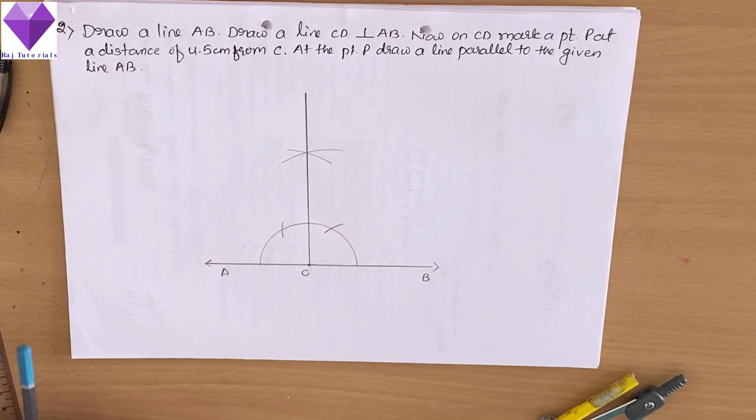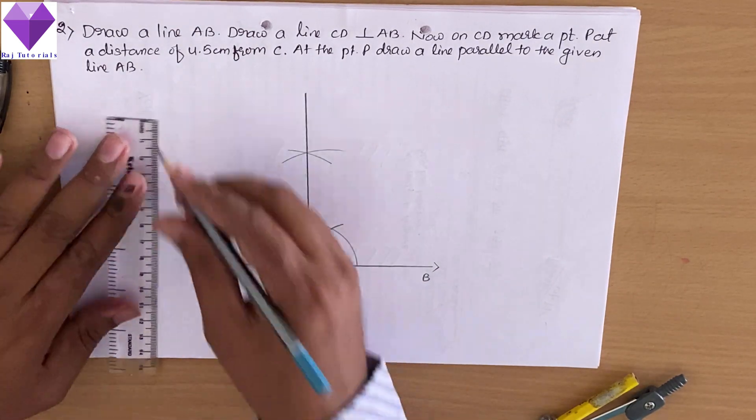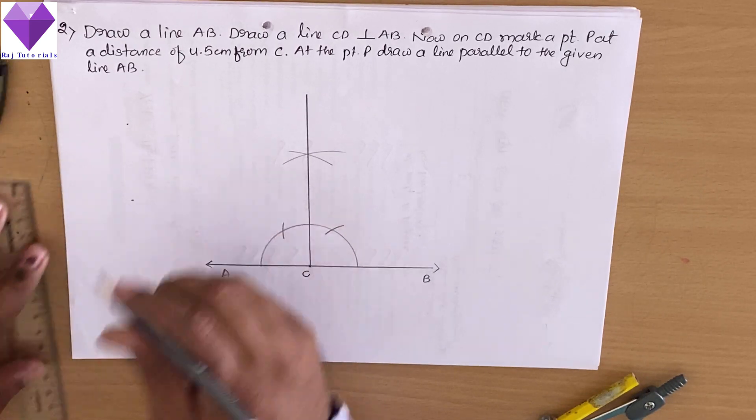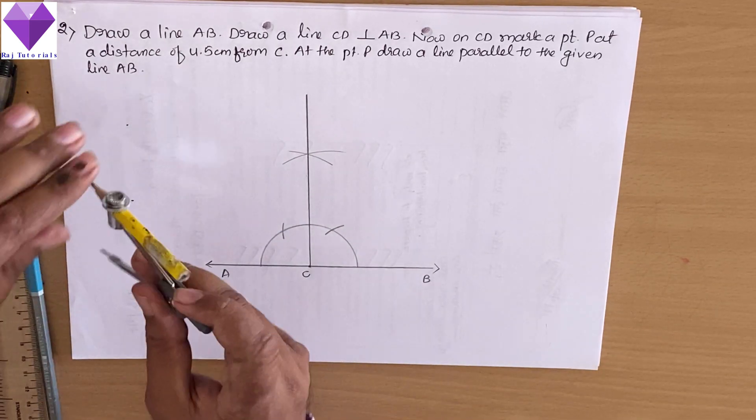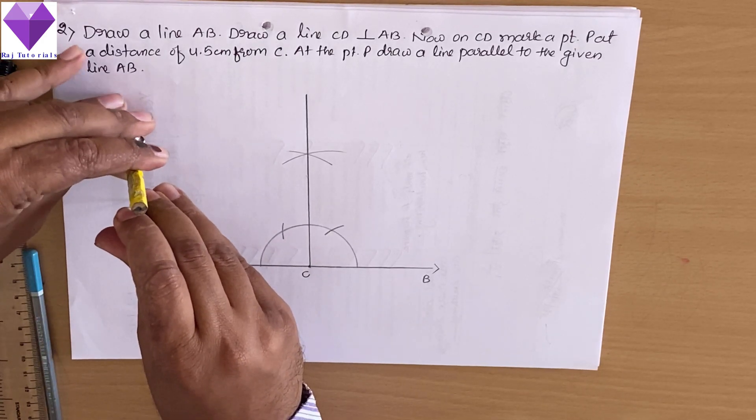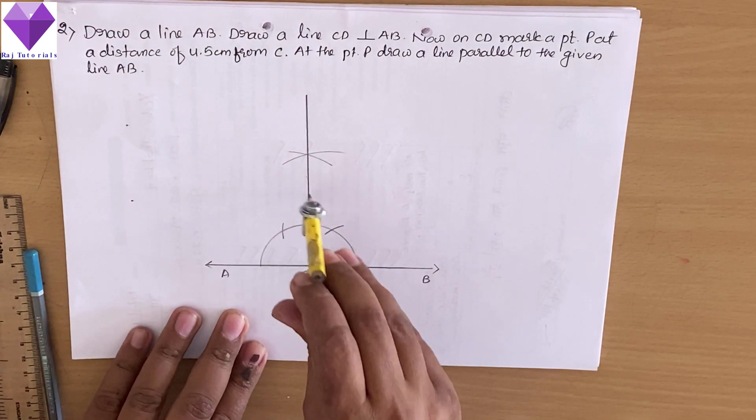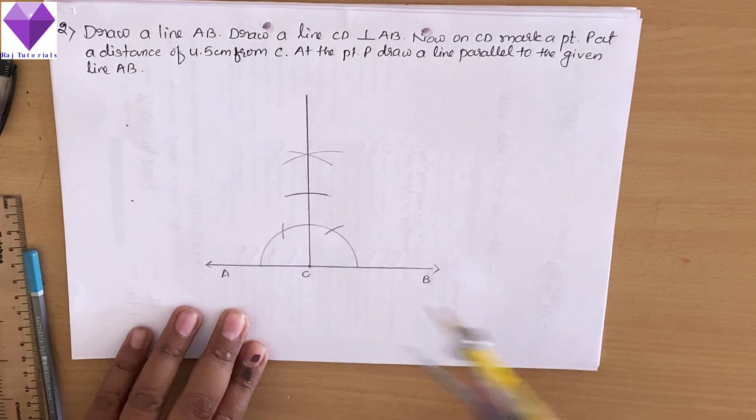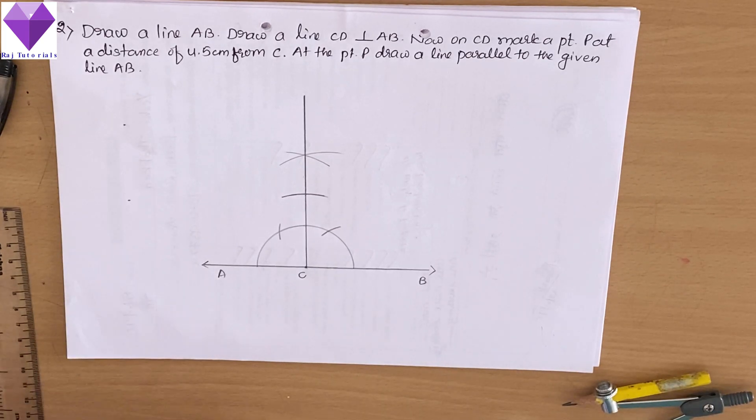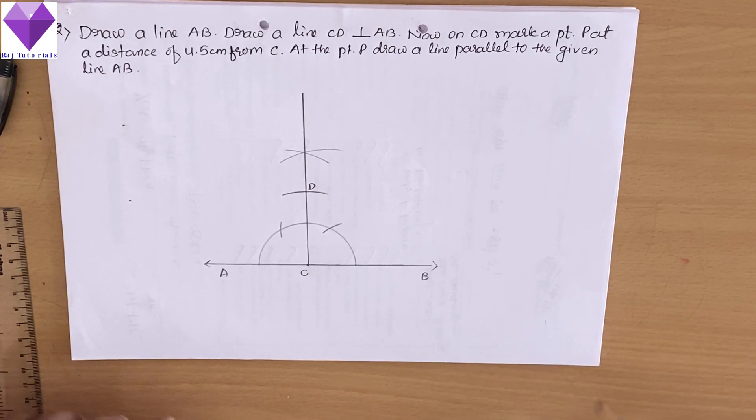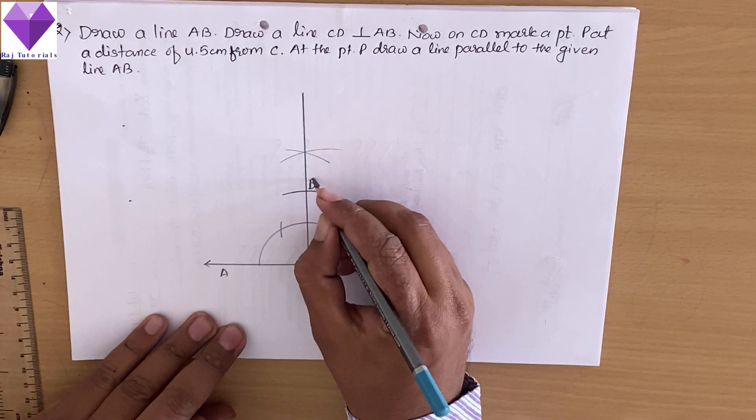Now from C point, I have to cut a 4.5 centimeter point. So with this C point, I am cutting a 4.5 centimeter arc. Let me call this point as D. Now at D, I have to draw a perpendicular. This point as P, as he has given us the name P.